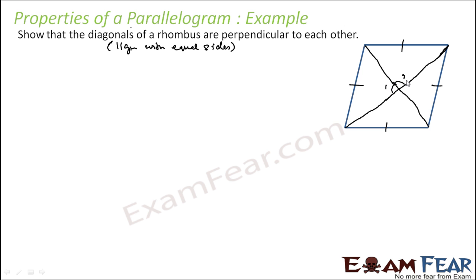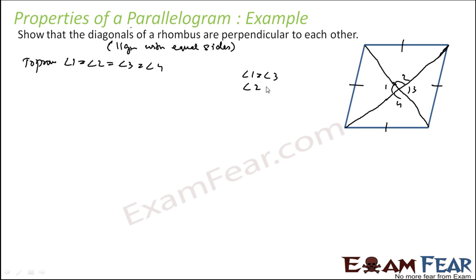Let us label the angles as angle 1, angle 2, angle 3, and angle 4. To prove the diagonals are perpendicular, we need to show angle 1 = angle 2 = angle 3 = angle 4 = 90°. We already know angle 1 = angle 3 as vertical opposite angles, and angle 2 = angle 4 similarly. So if we can prove either angle 1 = angle 2 or angle 1 = angle 4, we can prove they are all 90 degrees.